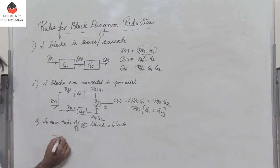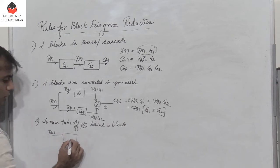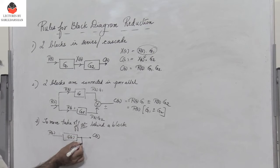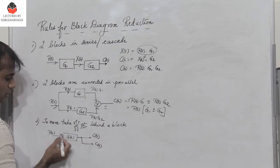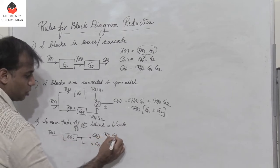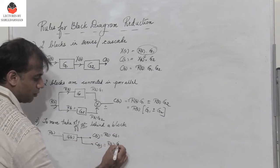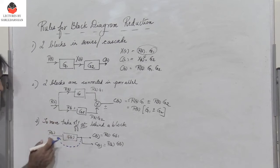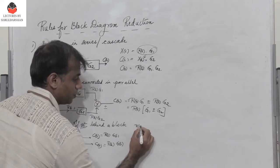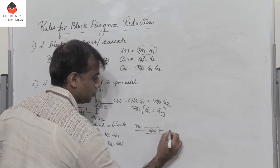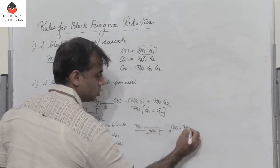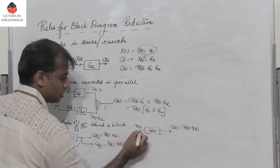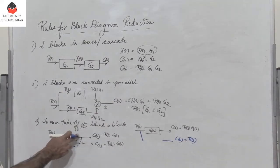The next rule is to move a takeoff point behind a block. Suppose we have r of s, then a block with function g of s, and then a takeoff point giving output c of s equals r of s into g of s. If we move the takeoff point behind the block, we would get only r of s at that branch — because g of s is absent — but at the output we need r of s into g of s.